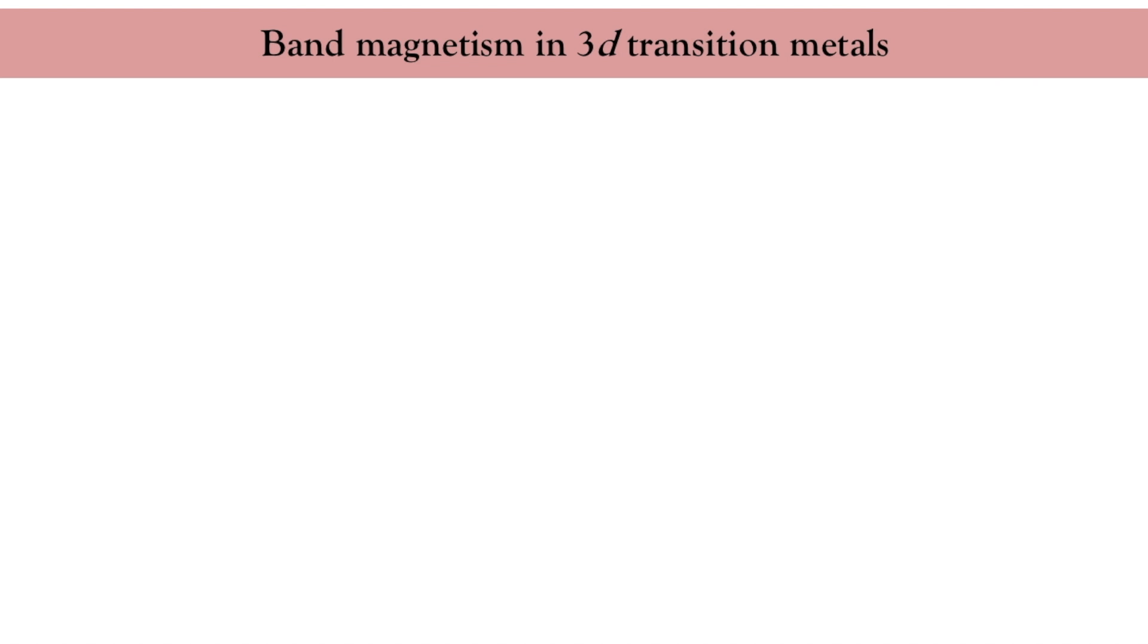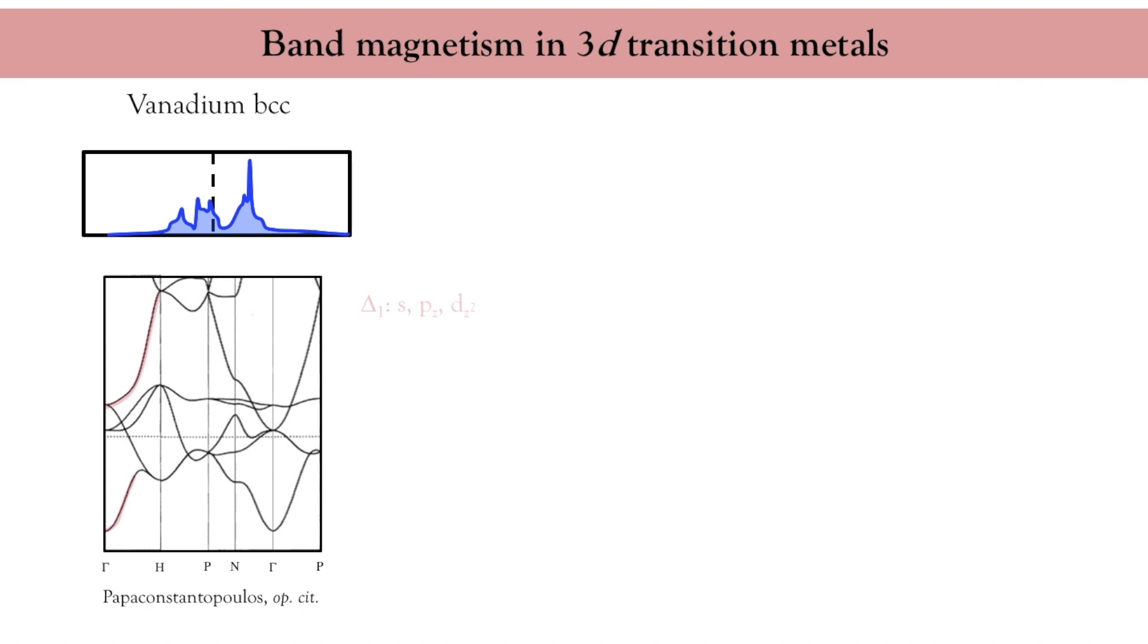Let me now wrap up this part of the lecture and connect the tight binding model we have discussed previously with the onset of magnetism. At the beginning of the lecture, I took vanadium as an example of BCC transition metal. If I look closely at the band structure close to gamma points, I can identify the red bands associated with s, p, and d_z^2 orbitals. In the language of group theory, these bands are said to be in the delta-1 symmetry. The green bands are associated with d_xy, d_yz, and d_zx, as well as p_x and p_y orbitals. They are said to be in the delta-2' and delta-5 symmetry. Finally, the blue bands are associated with the d_x^2-y^2 orbitals, and they are in the delta-2 symmetry.